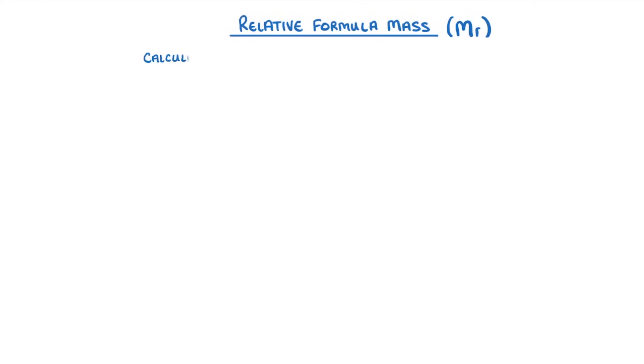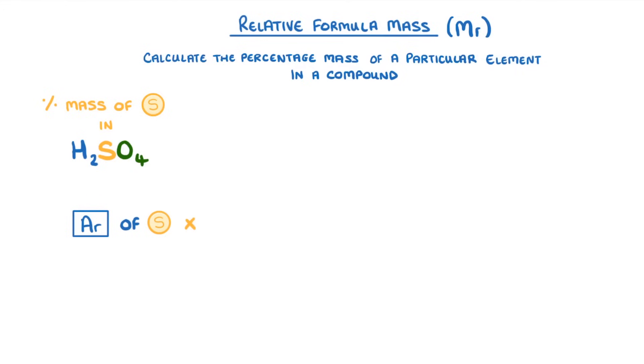You could also be asked to calculate the percentage mass of a particular element in a compound. For example we could find the percentage mass of sulfur in sulfuric acid. For this we do the Ar of the element we're looking for times the number of atoms of that element divided by the Mr of the compound and then we multiply it all by 100 to turn it into a percentage.